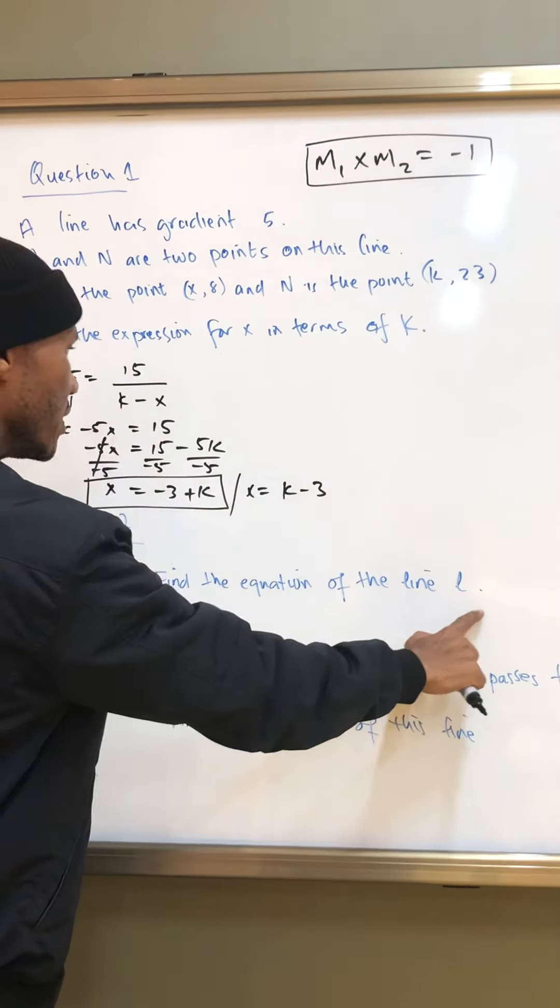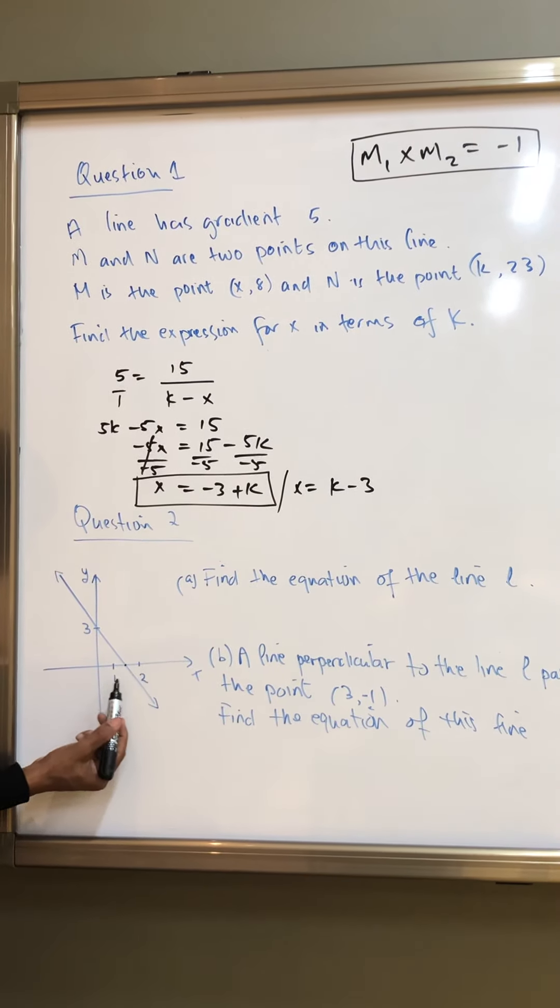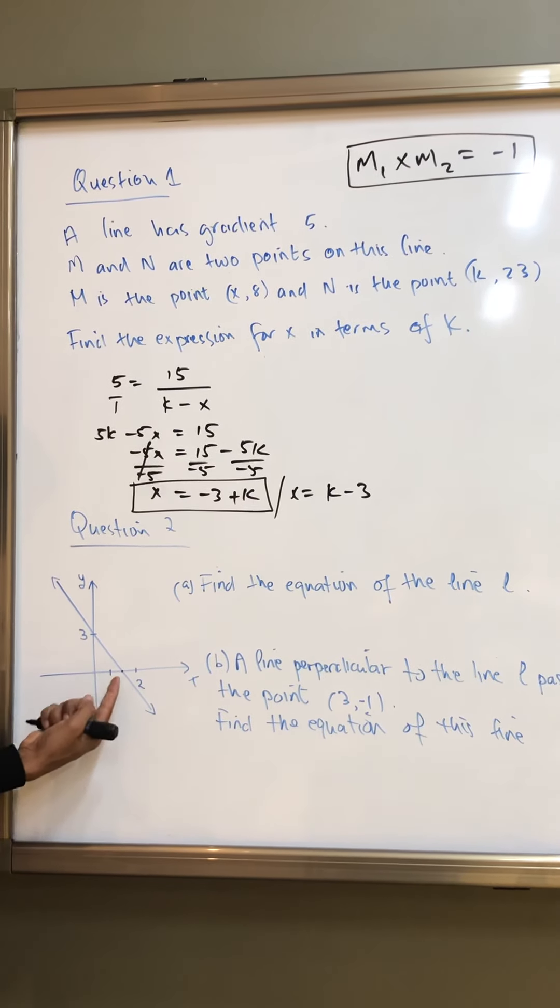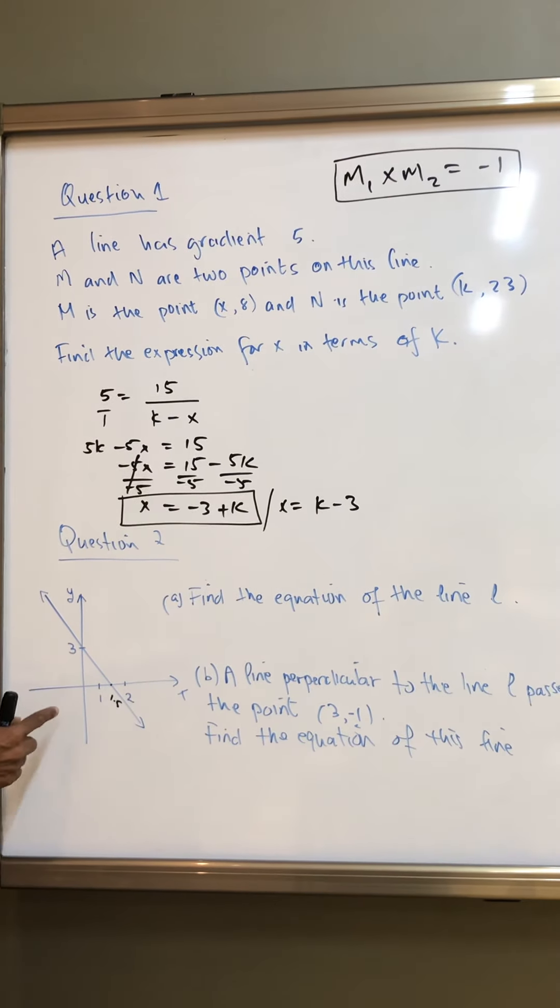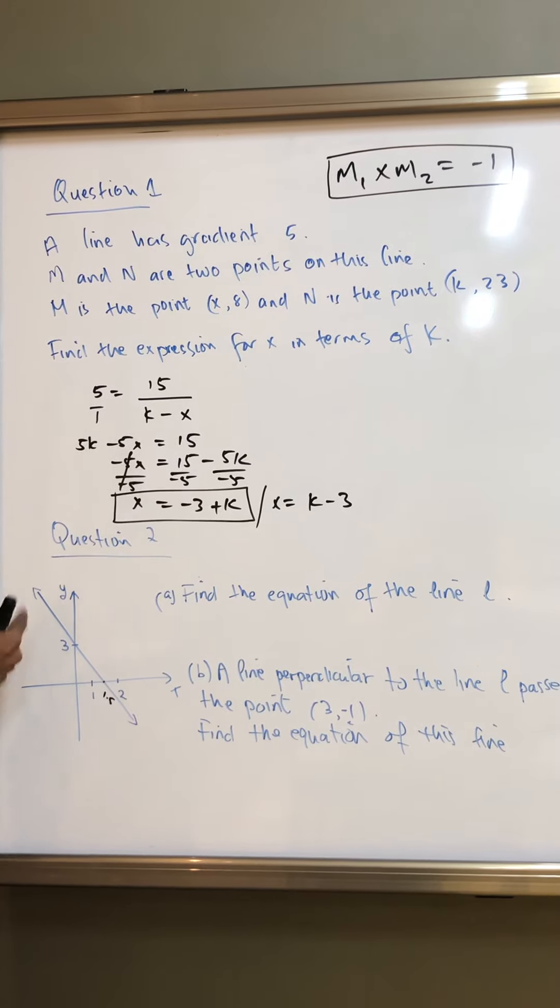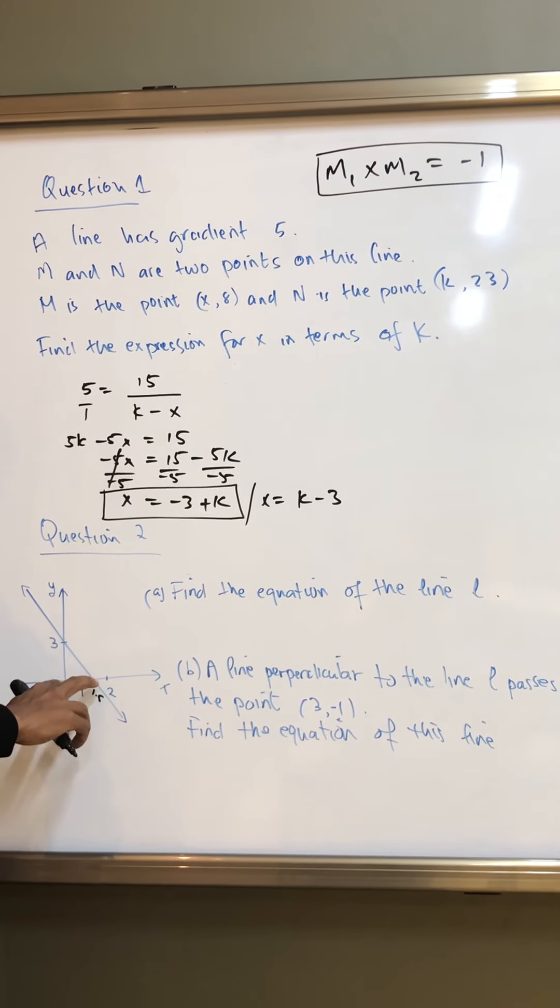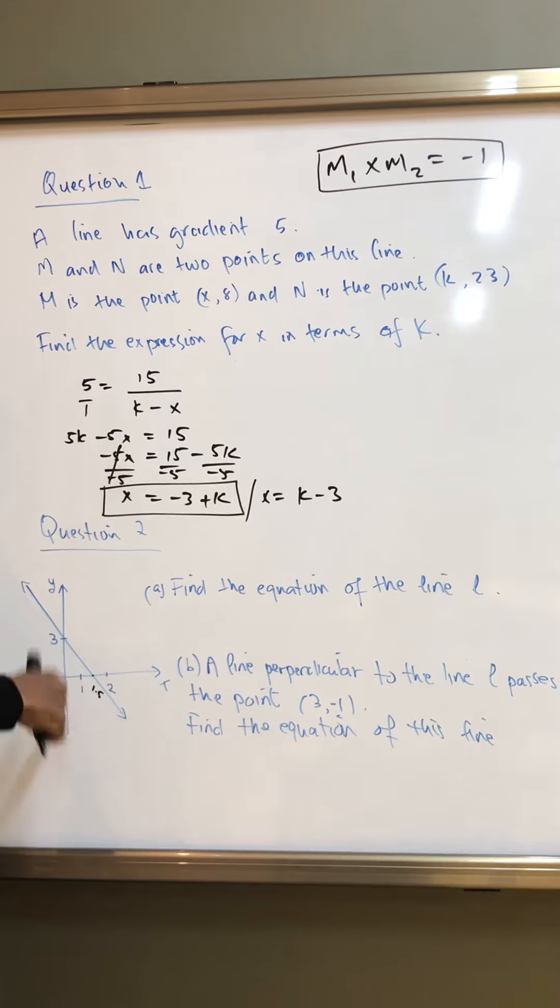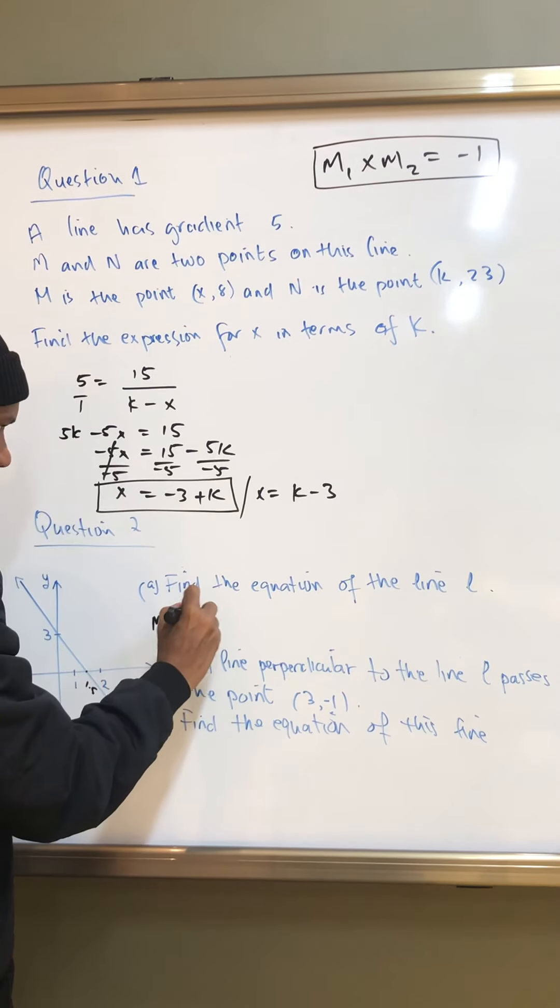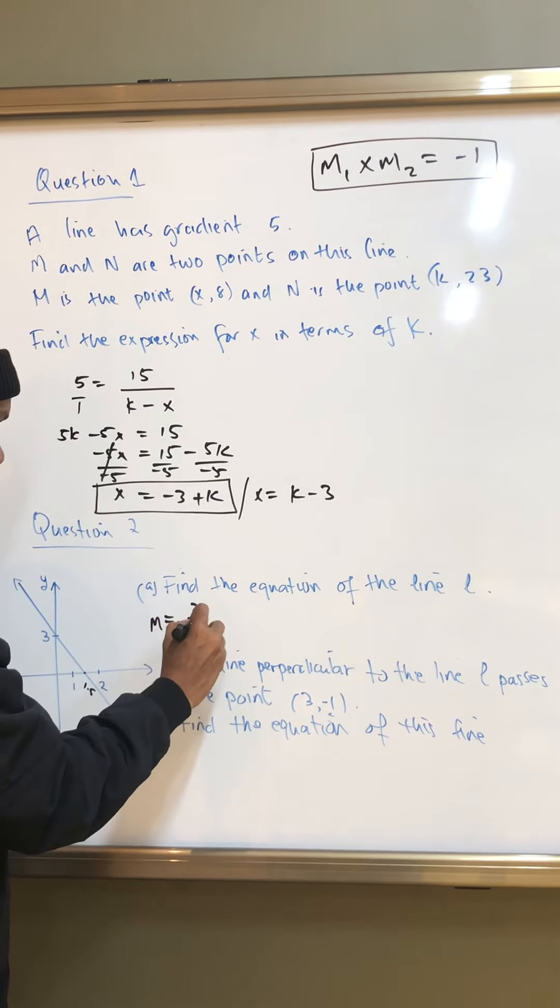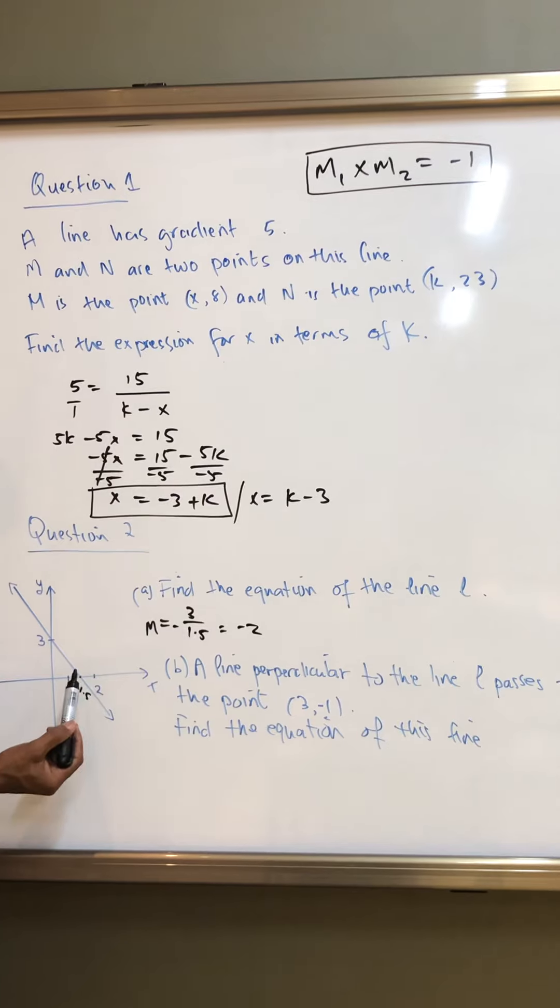Question 2 says find the equation of line L. Here you can see that between 1, just halfway between 1 and 2. So that means it's 1.5. So x here is 1.5, x is 1.5 and your y is 3, right? And how do you find gradient? Gradient is the change in y divided by the change in x. But then this gradient is negative. So you know that it's going to be negative. So your m change in y is 3 and the gradient is negative 1.5, negative 2. And some of you would have said, okay, rise over run.